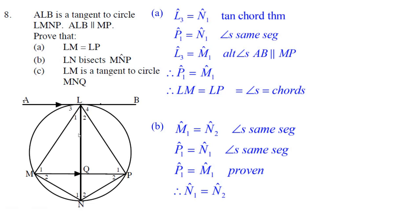We're going to prove that LN here bisects the angle, that N1 is equal to N2. Well, let's try this. We've got M1 is equal to N2 because it opens up. Look at this. M1 and N2, angles in the same segment.